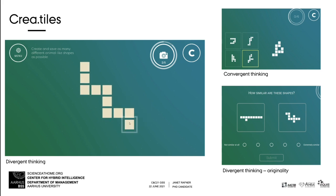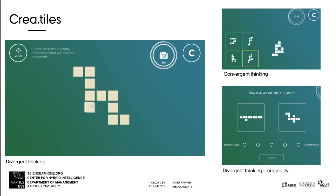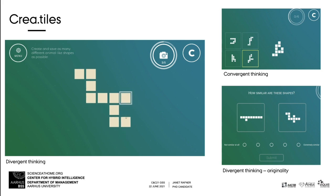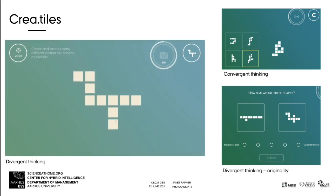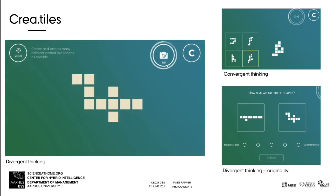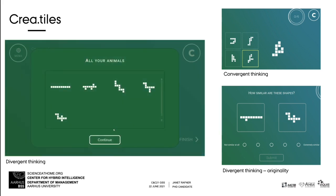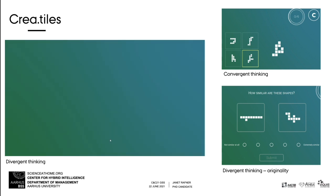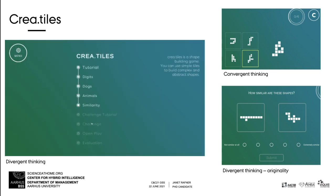In the convergent thinking mode, players are presented with a target figure and four possible starting figures. The object is to select the best starting shape and rearrange it into the target shape in the fewest possible number of steps. There is only one best choice. Participants have 30 seconds to choose a starting shape and one minute to recreate the target shape. In the free play mode, players are instructed to make the most creative shapes they can think of and save at least five different shapes. Finally, they are shown two pairs of figures side-by-side and asked to pick the most creative ones.